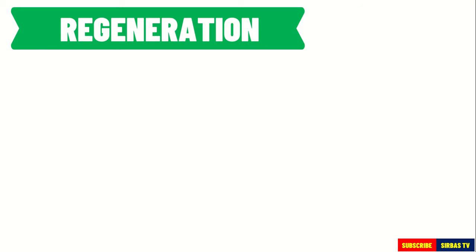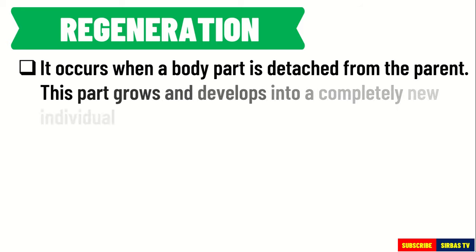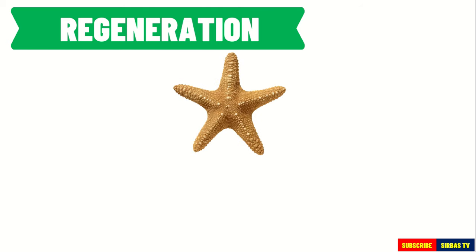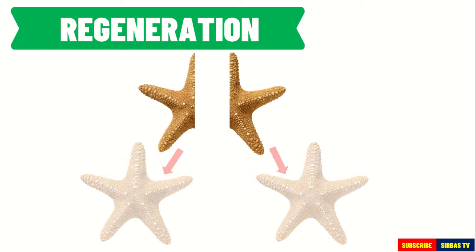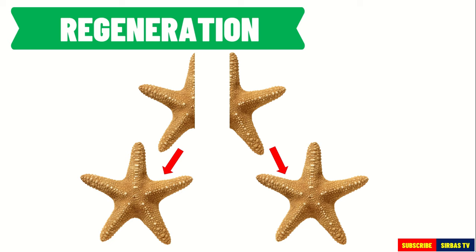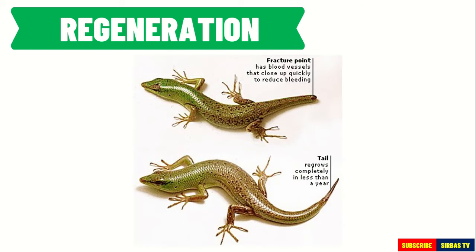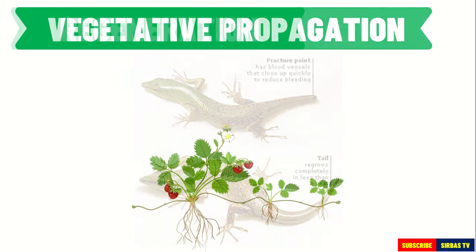Next is regeneration. Regeneration occurs when a body part is detached from the parent, and this part grows and develops into a completely new individual. For example, the central disk of a starfish may break into two pieces, and each piece regenerates the missing parts. Note that regrowth of lost parts, such as in the case of a lizard's tail, is not considered a type of reproduction since no new organism is formed.